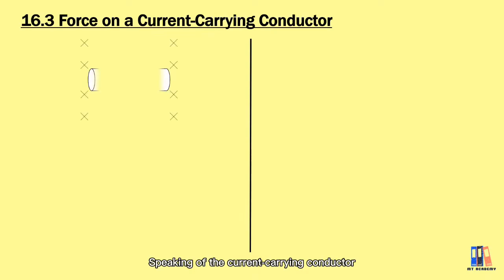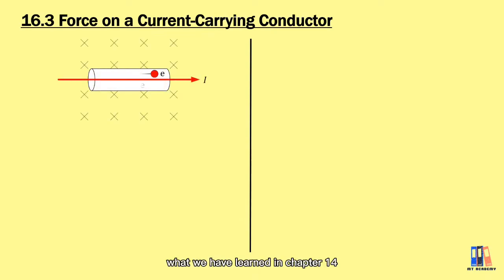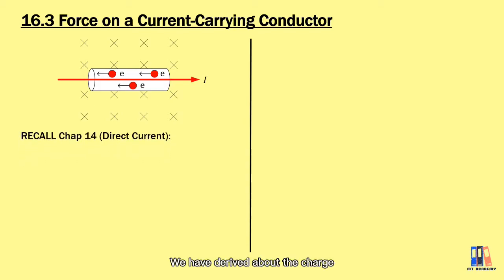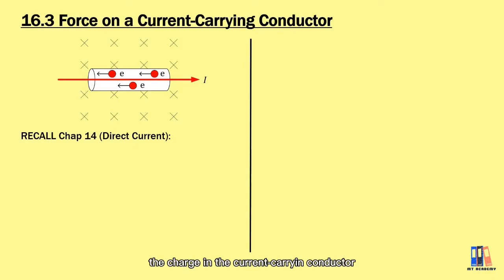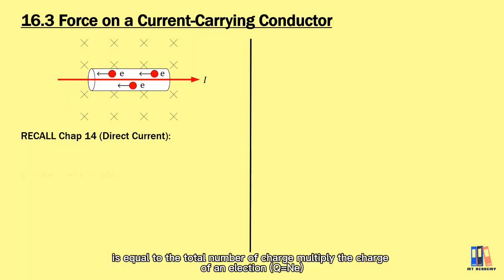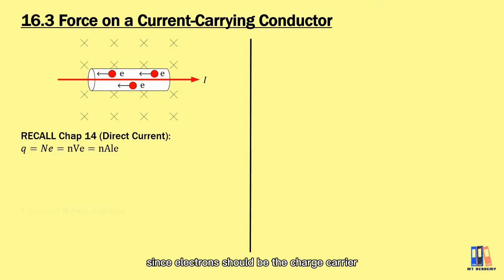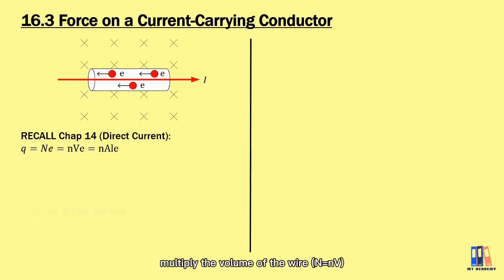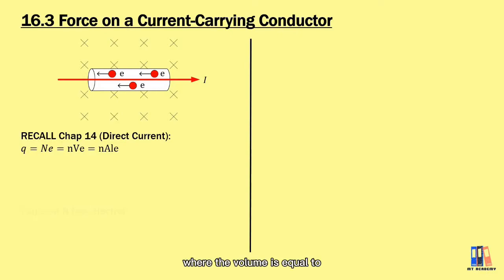Speaking of the current-carrying conductor, let us review what we learned in Chapter 14 about direct current. We derived the charge and the current in that chapter. The total charge in the conductor or wire is equal to the total number of charges multiplied by the charge of the electron, since the electron is the charge carrier. The number of charges n is equal to the charge density multiplied by the volume of the wire, so the total charge can be expressed as N·A·L·e, where the volume equals the cross-sectional area multiplied by the length of the wire.